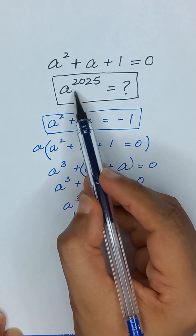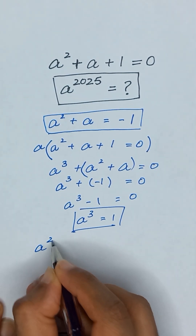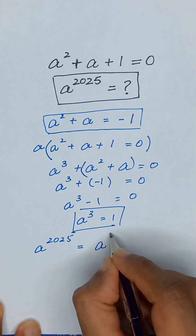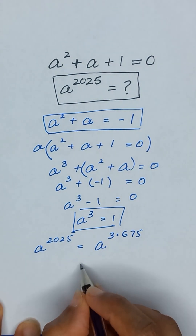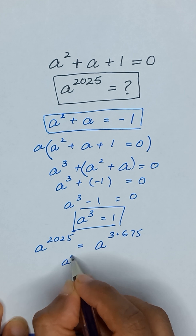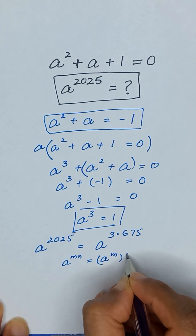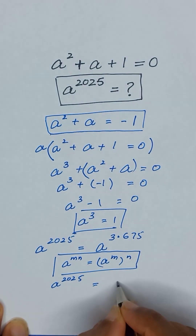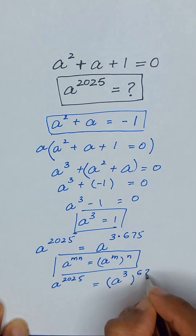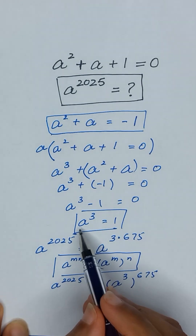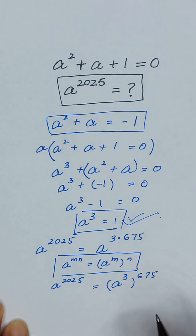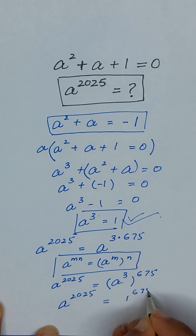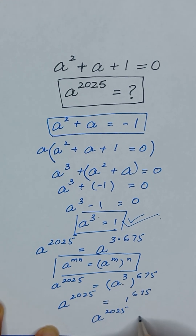We need to find A to the power 2025. We can write 2025 as 3 times 675. Using the exponent rule A to the power MN equals (A to the power M) to the power N, we get A to the power 2025 equals (A cubed) to the power 675. Since A cubed equals 1, this becomes 1 to the power 675, which equals 1.